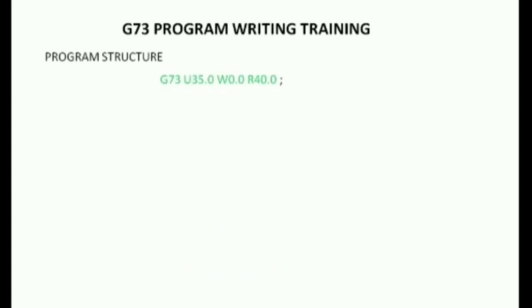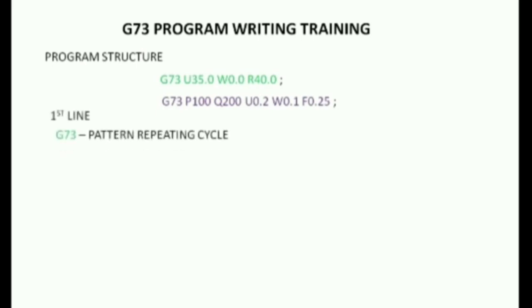How do we learn the G73 program? The G73 program has a structure: N and N — it has two lines. We are using G71 and G72 structure with a 1st line and 2nd line. The G73 program has a pattern repeating cycle. We are using U35 and X0. We will explain how to calculate the depth of cut — that means U35.